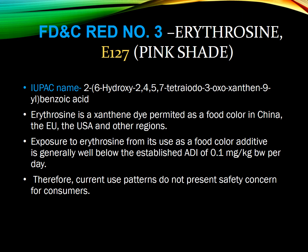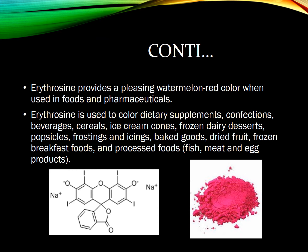Erythrosine, FD&C Red No. 3, has the E number E127 and a pink shade. It is categorized under the group xanthene and is a permitted dye in China, European countries, USA, and other regions. The limit is 0.1 mg per kg body weight per day. Erythrosine provides a pleasing watermelon-red, pinkish color in foods and pharmaceuticals. It is used in dietary supplements, confectionery, beverages, cereals, ice cream cones, frozen dairy desserts, popsicles, frosting, baked foods, and processed foods.